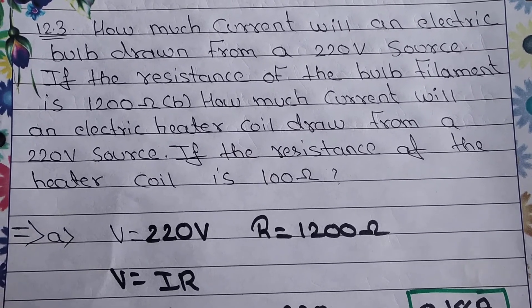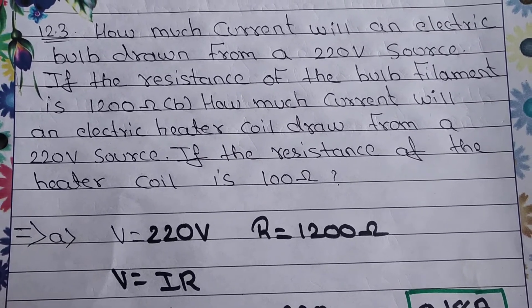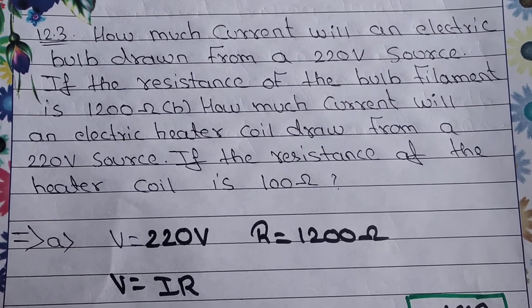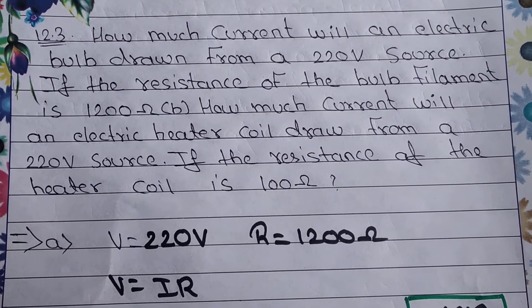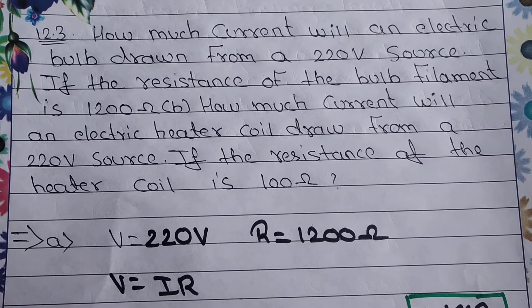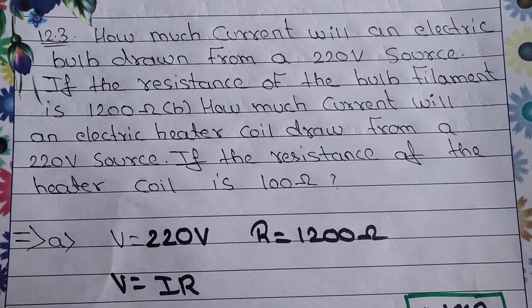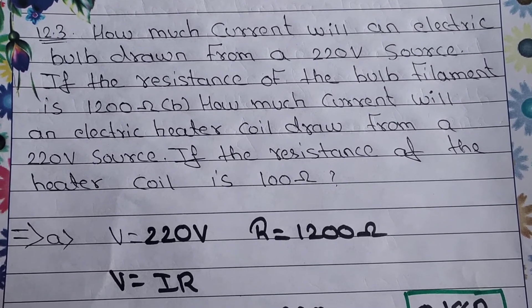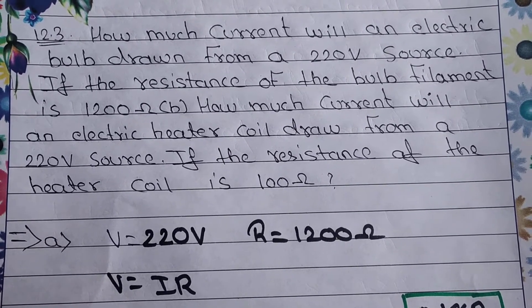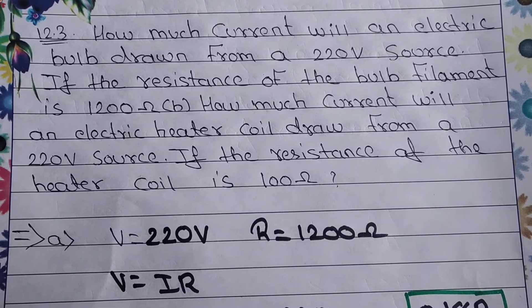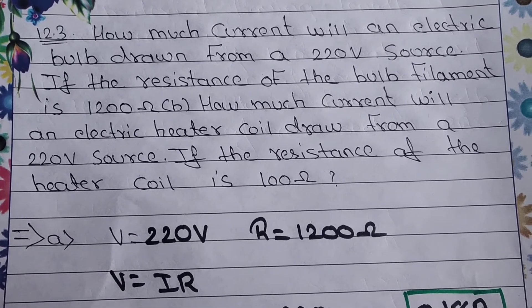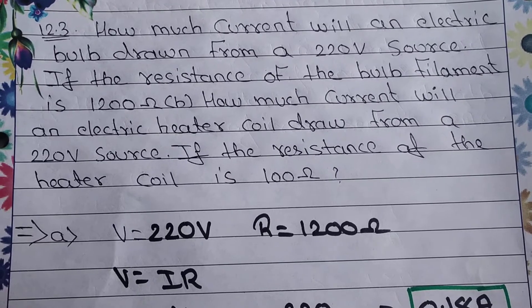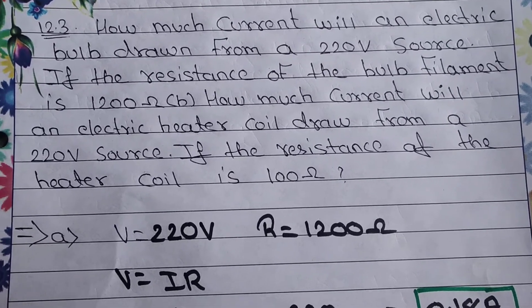We have to find the amount of current. In this question, what we need to find is current. We need to find the current when V is 220 and R is 1200. In the second part, again we have to find I when V is 220 and R is 100. So now let's start the question.